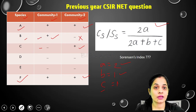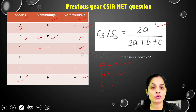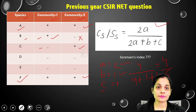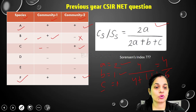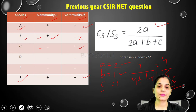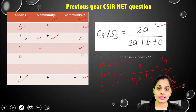Now calculating: 2a = 2 × 2 = 4. So we have 4 upon (4 + 1 + 1) = 4 upon 6, which equals approximately 0.6. In this way we can calculate the similarity coefficient index using Sorensen's index.